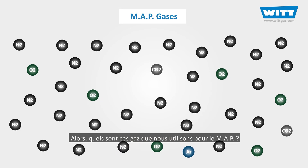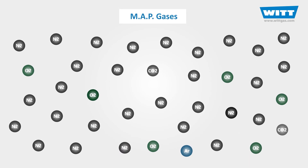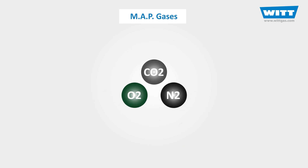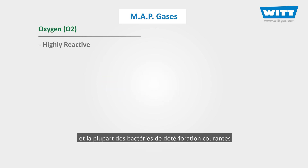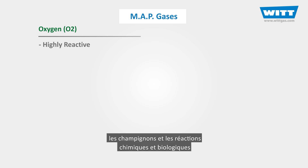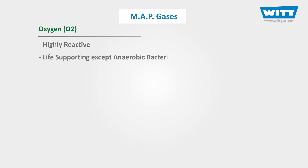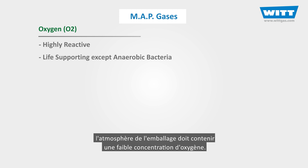So what are these gases we use for MAP? All of these come from the air. The first one is oxygen, or O2. As we all know, oxygen is highly reactive and most of the common spoilage bacteria, fungi, and chemical and biological reactions require oxygen to live and grow. Therefore, to increase the shelf life of most foods, the pack atmosphere should contain a low concentration of oxygen.